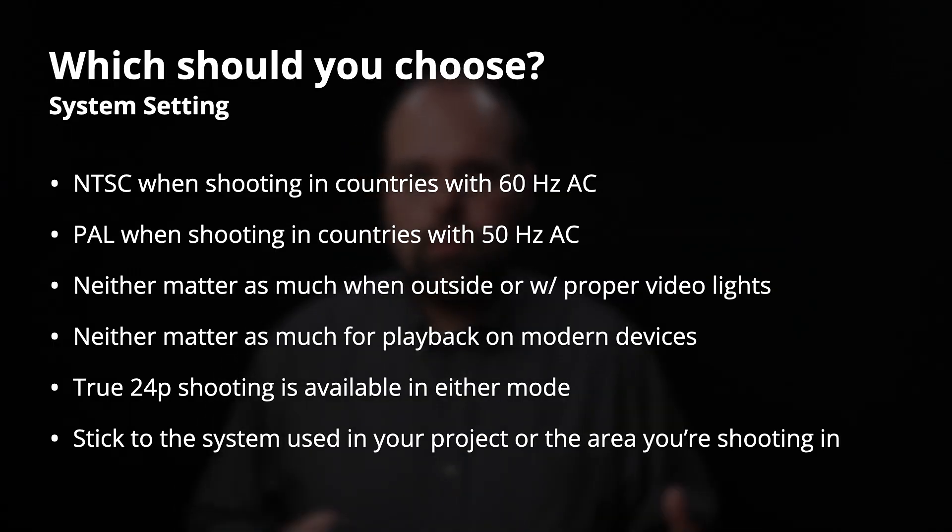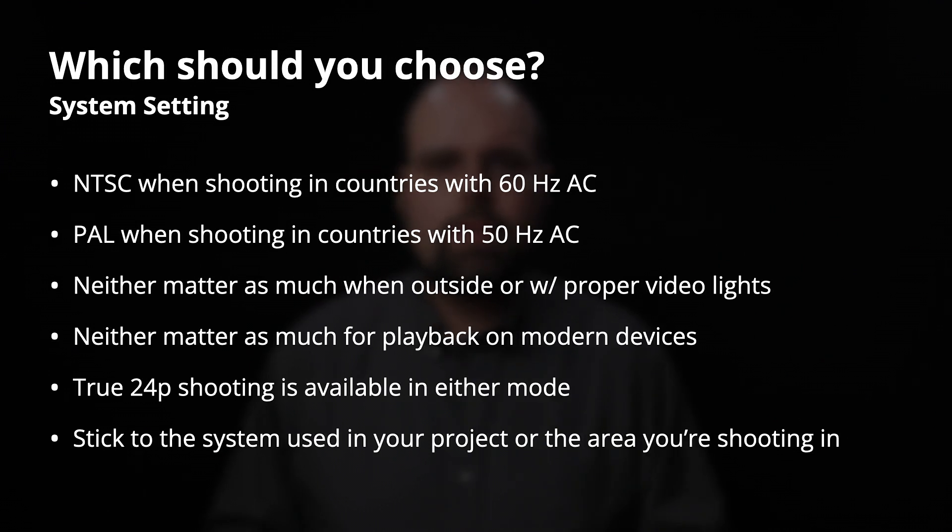So which should you choose? The easy answer: stick to the system used in the area you're shooting in or the one specified for your project. More specifically, use NTSC when shooting in countries with 60 Hz AC power, and PAL when shooting in countries with 50 Hz AC power. The choice doesn't matter much when shooting with proper video lights or for playback on modern devices, but it will matter for broadcast-related work. Finally, the camera does support a true 24 frames per second mode, available in either NTSC or PAL — you don't have to change this setting to access it.